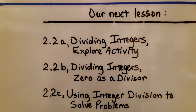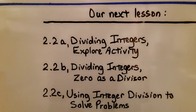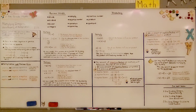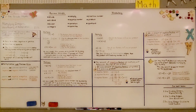We're finished with lesson 2.1 and moving on to lesson 2.2. Lesson 2.2a is dividing integers, and we're going to do the explore activity. I hope you wrote down the even-odd rule in your notes. Remember: an even amount of negative factors produces a positive product; an odd amount of negative factors produces a negative product. I hope you have a great day and join me for the next lesson.